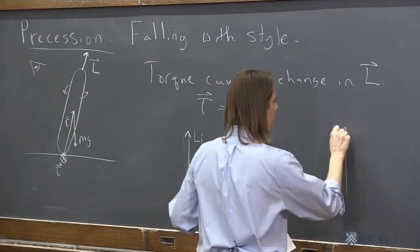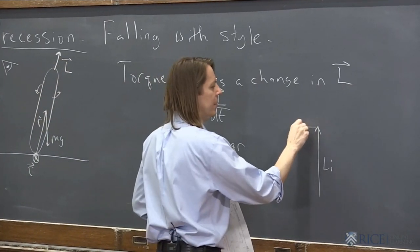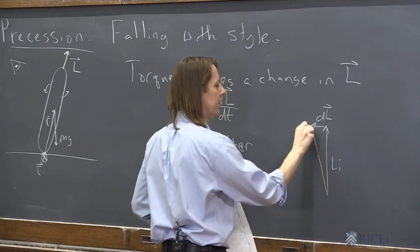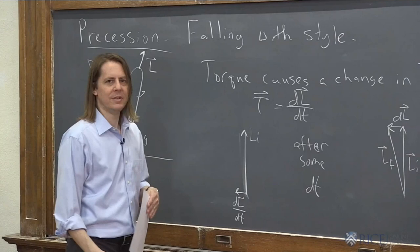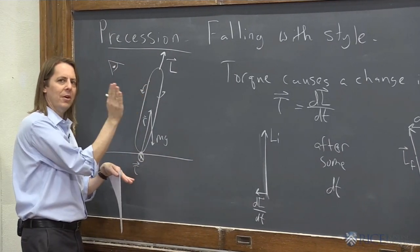You're going to have Li, and you're going to add this, so you're going to have a little dL up here, and then you're going to have Lf. That's sort of your vectors. That's what happens in dt. You can see that since it's small, it's like turning. It's like moving L over.